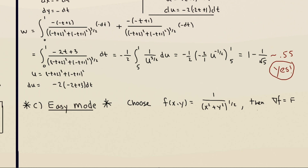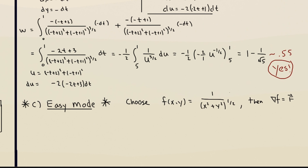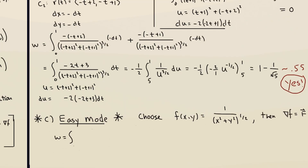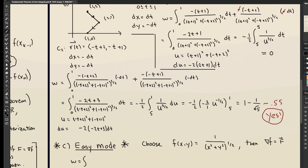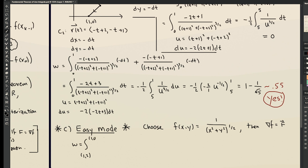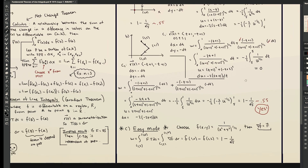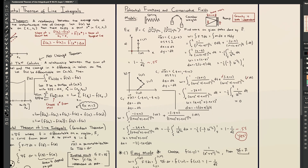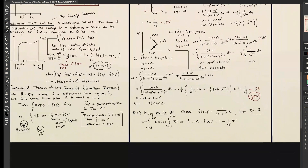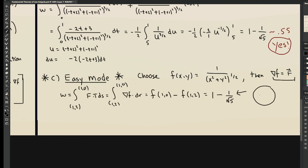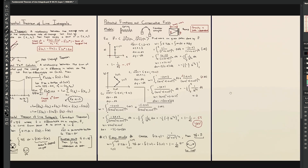All of that insanity was the hard way. In the video on gradient fields I actually prove that the gradient of this scalar function equals the vector-valued force field. So using the Fundamental Theorem of Line Integrals — which I love — I just plug in the endpoints: from (1, 2) to (1, 0), I get 1 minus 1 over the square root of 5. This illustrates that if your vector field is the gradient of some scalar-valued function, the path doesn't matter — only the endpoints matter, and you simply plug them into the scalar function and subtract, just like the Fundamental Theorem of Calculus.